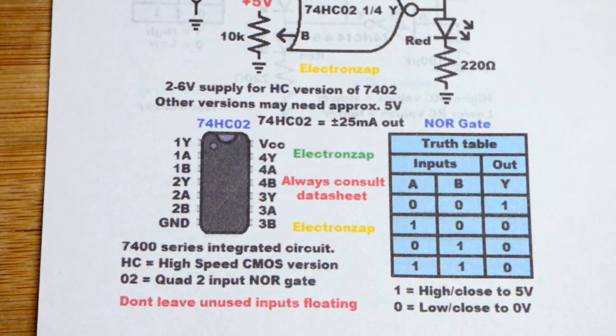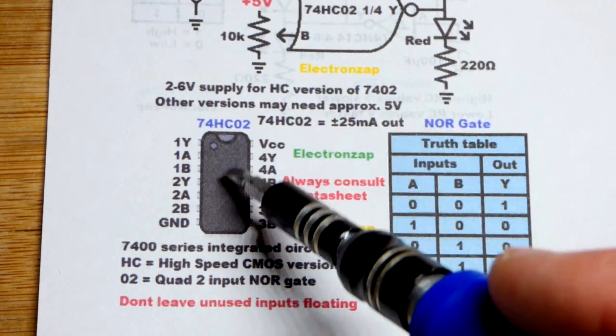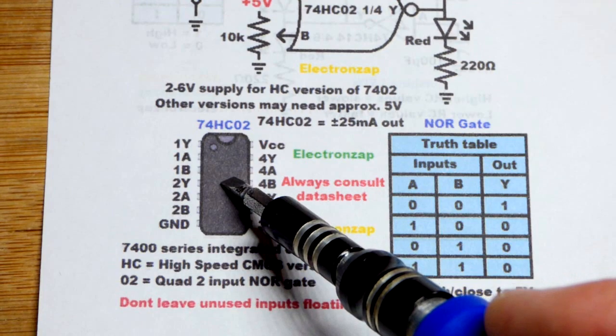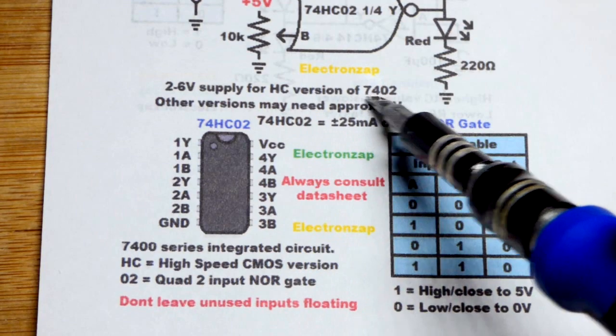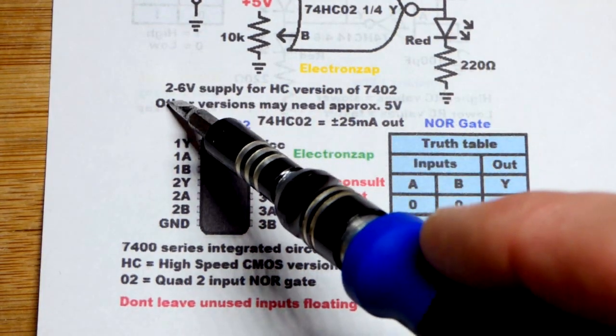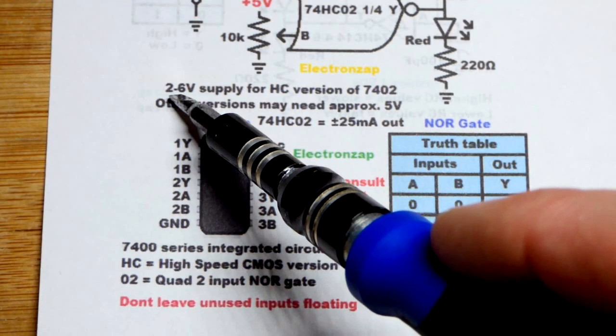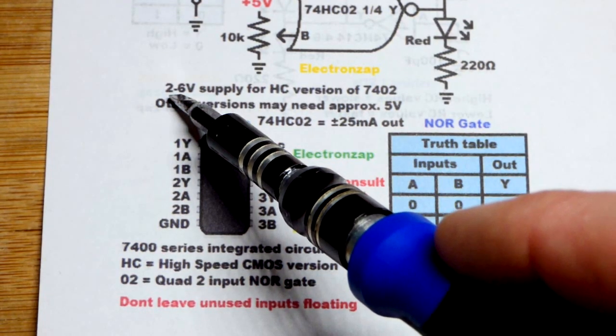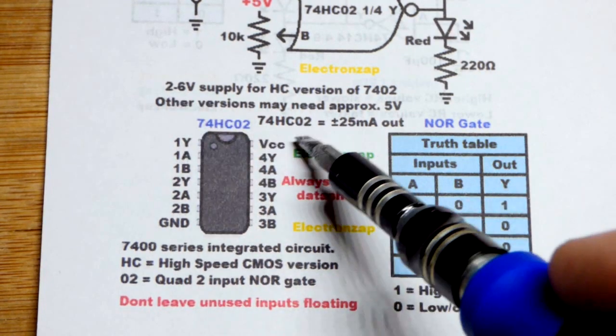The voltage we're going to use is 5 volts, which is pretty much always, if not always, a safe voltage for these integrated circuits. They're generally made for 5 volts. The high-speed CMOS version, though, of the 7402, we can work with 2 to 6 volts safely. So that's not even the absolute maximum voltage range, but that's recommended right there, 2 to 6 volts.